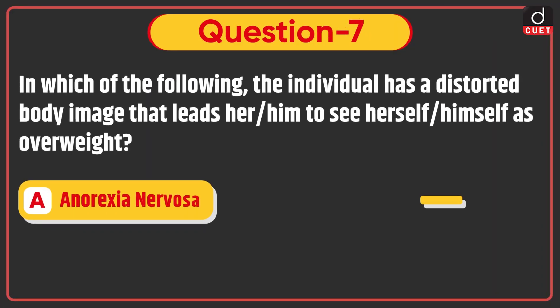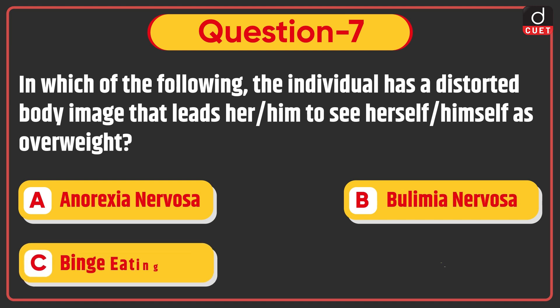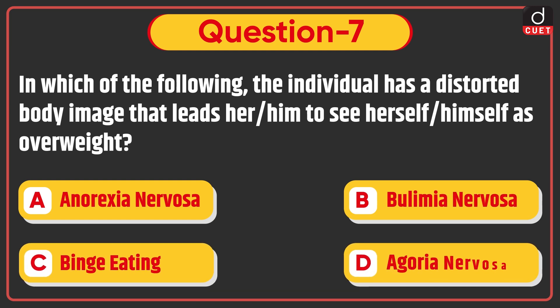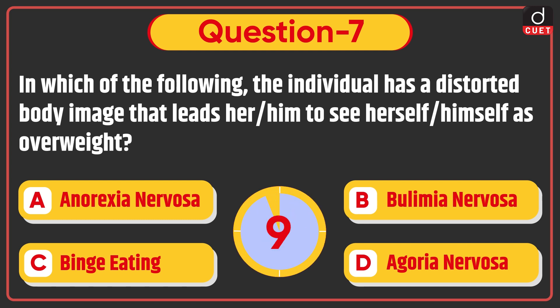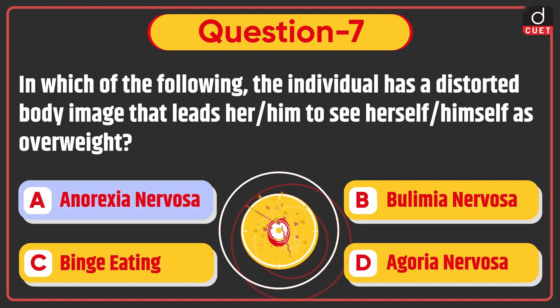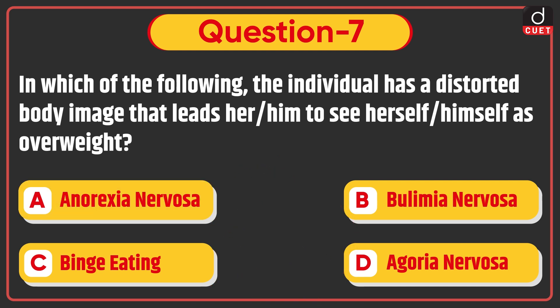Next question is: In which of the following does the individual have a distorted body image that leads her or him to see herself or himself as overweight? Anorexia nervosa, Bulimia nervosa, Binge eating, or Agoria nervosa? The correct answer is option A, Anorexia nervosa.